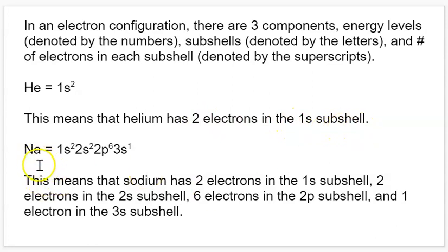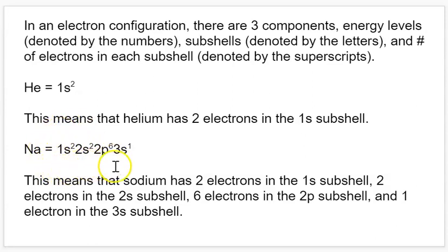Say we want to make something a bit more complicated, like sodium, which has 11 electrons. If you were to draw a Bohr model for it, you'd see two electrons in the first shell, eight electrons in the second shell, and one electron in the third energy level. We can draw the first shell as 1S2 since there are only S subshells available at the first level. The second level has S and P — two go in the S subshell and six go in the P subshell. So we have 1S2, 2S2, 2P6.